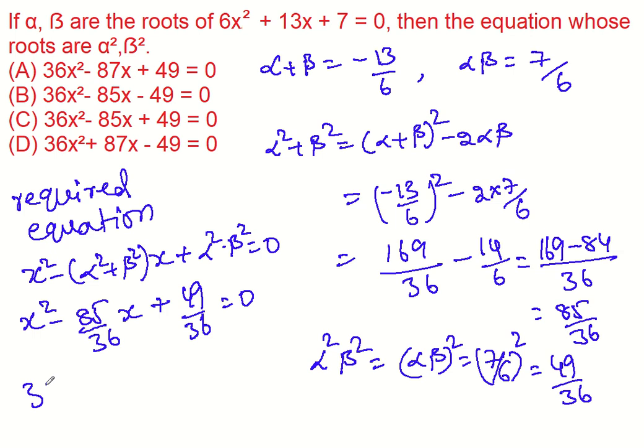The LCM is 36. So 36 x square minus 85 x plus 49 equal to 0. The answer is c.